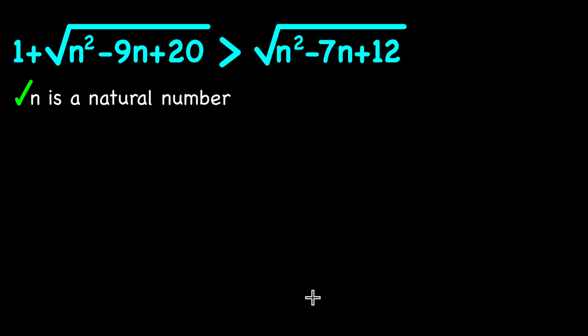Hey there guys, in this video we're going to be solving the 2012 Turkish Math Olympiad problem in which we are given an inequality where we have 1 plus square root of n squared minus 9n plus 20 is greater than the square root of n squared minus 7n plus 12, such that n is a natural number, and we want to solve for n.